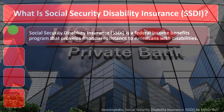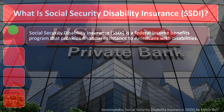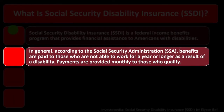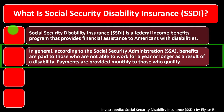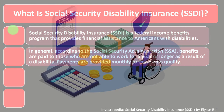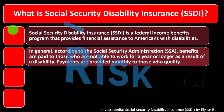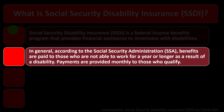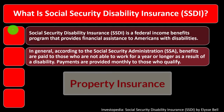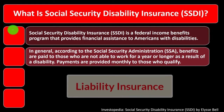Instead of purchasing it from a private company, this is a federal program. According to the Social Security Administration — the SSA — benefits are paid to those who are not able to work for a year or longer as a result of a disability. This is part of our risk mitigation strategies, similar to property insurance, liability insurance, or life insurance.